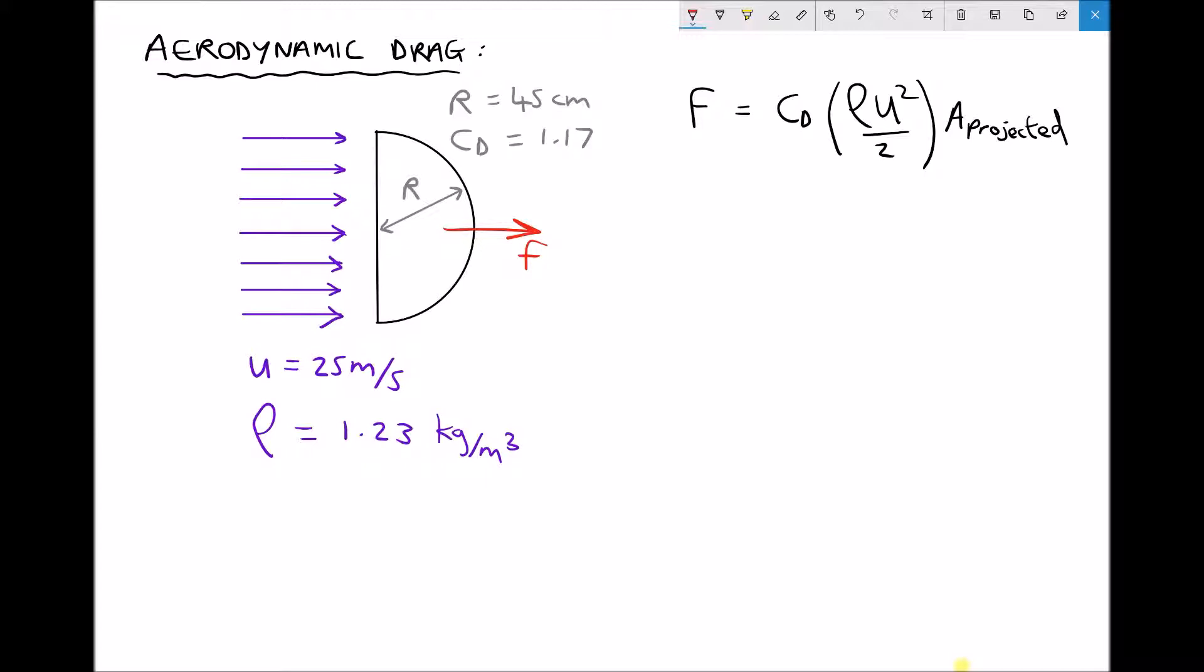Inside the brackets we have rho, which is density, u squared over 2, where u is the velocity of the air, and we multiply that by the projected area.